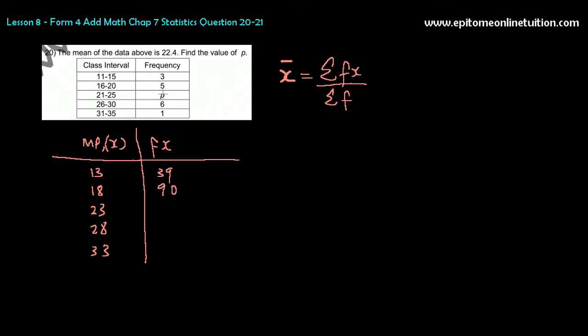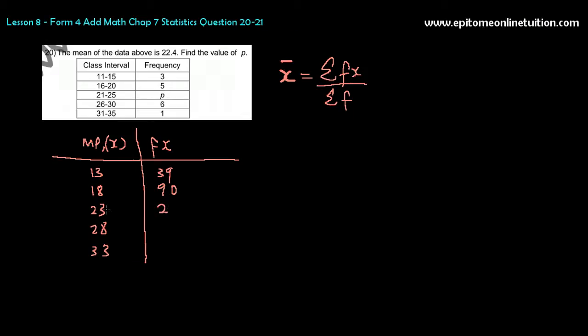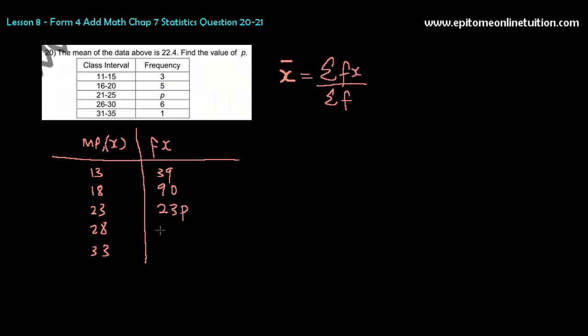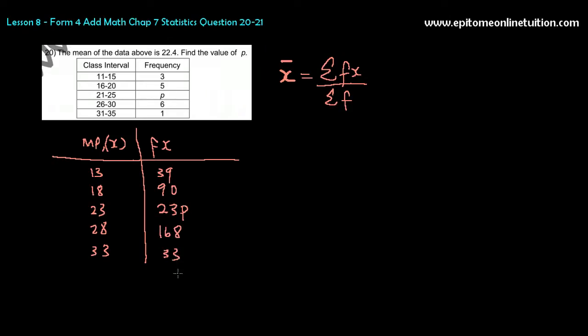90. And now there is a p here, so don't worry about it, just do it as usual. It's 23 times p, so 23p. And then 28 times 6 is 168. And that is 33.